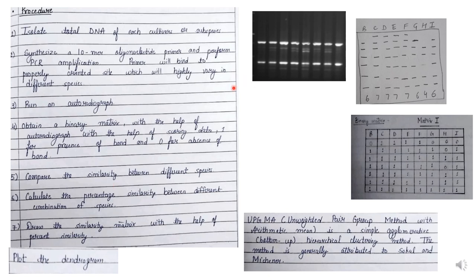We make the binary matrix by scoring the data or bands. We mark 1 for the presence of a band and 0 for the absence of a band. For example, in this particular RAPD profile you can see there are 8 lanes — B, C, D, E, F, G, H, I. We mark the bands accordingly, and then we compare the similarity between different species. In this diagrammatic representation, we have marked the presence of a band with 1 and the absence of a band with 0.